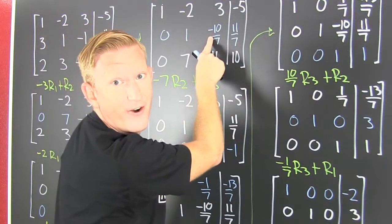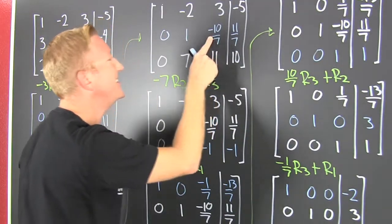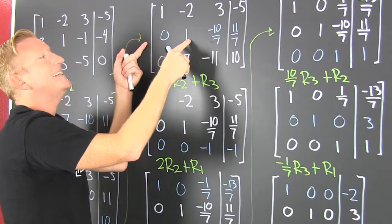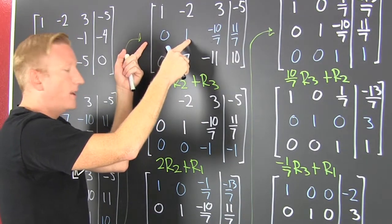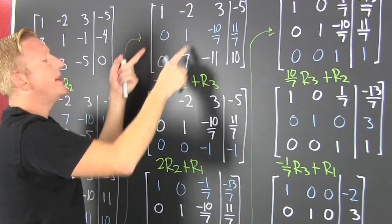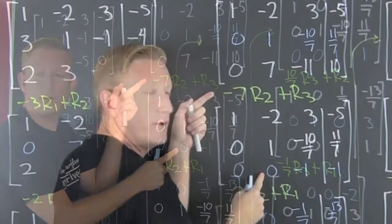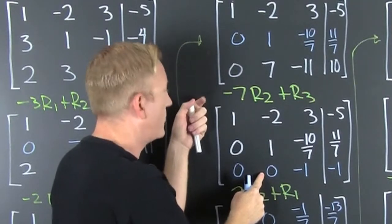What's nasty? Fractions! So then, alright, now that I have a 1 there, I need to kill the rest of that column. So then, I multiply this by minus 7 because I'm trying to kill that 7 and get a 0 right there.